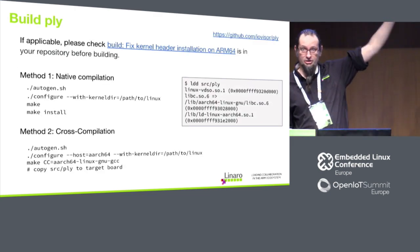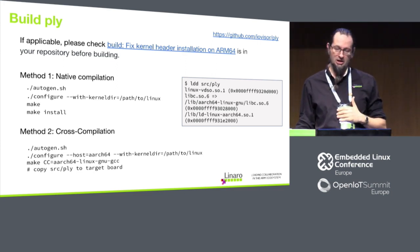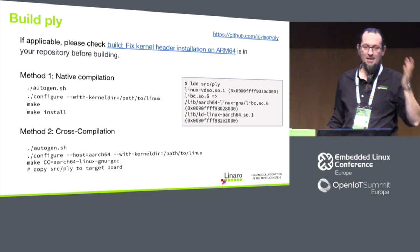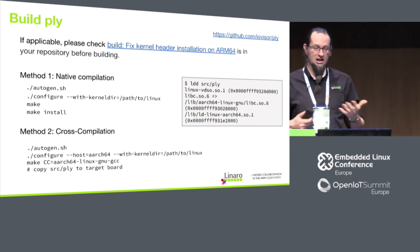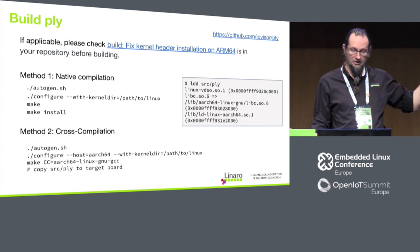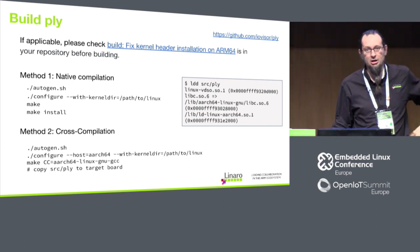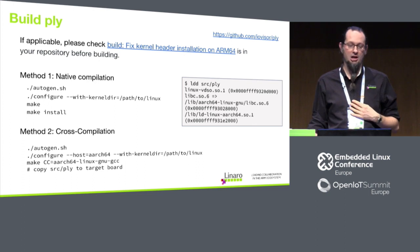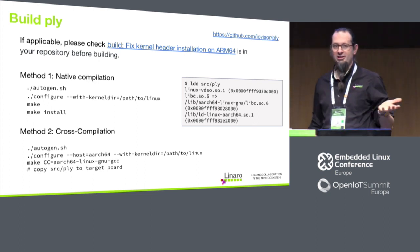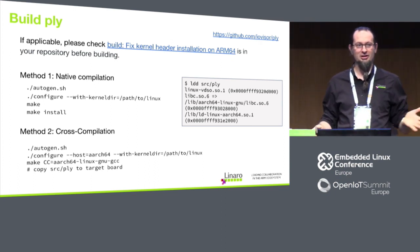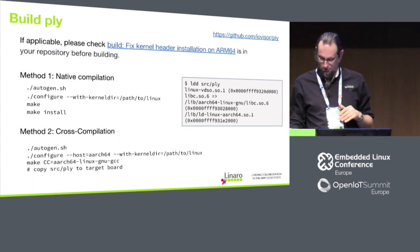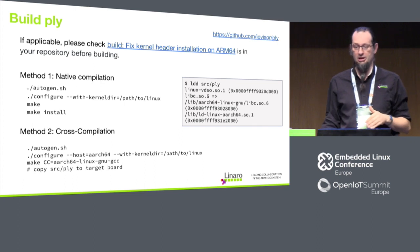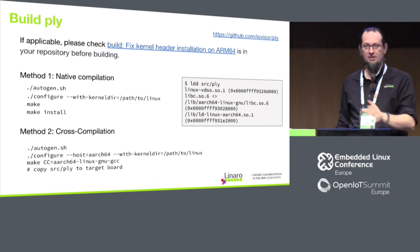The ldd output shows that Ply has no dependencies other than the C library — that's a big deal for embedded developers. It's amenable to cross-compiling with no extra libraries to copy. You do need to point it at the kernel directory of the kernel you're running with, because it gets the Linux version code from there. If you run it without that, it will pick up the 4.9 headers your distro uses as a baseline and it won't load the programs for you. When you upgrade your kernel, you don't have to recompile Ply.